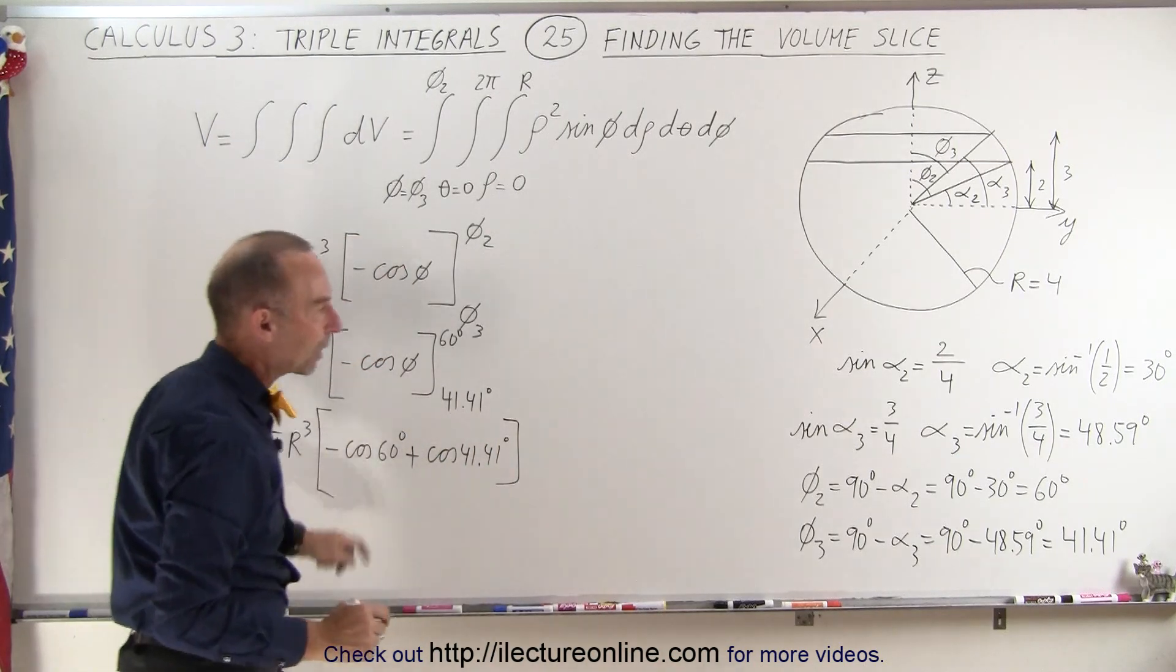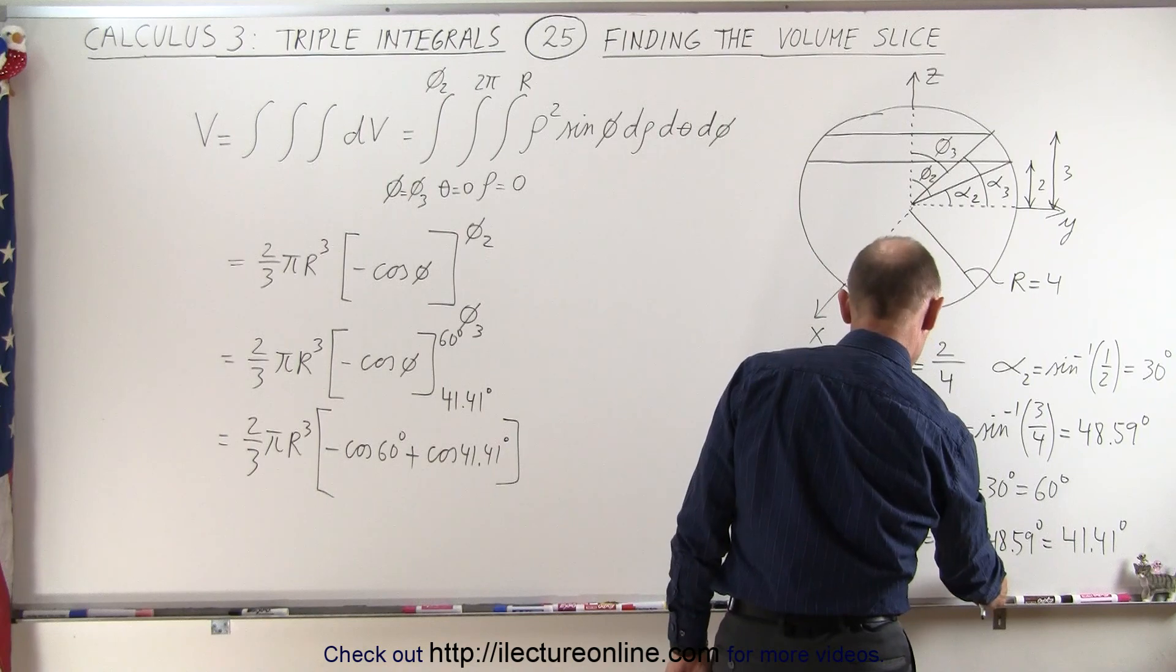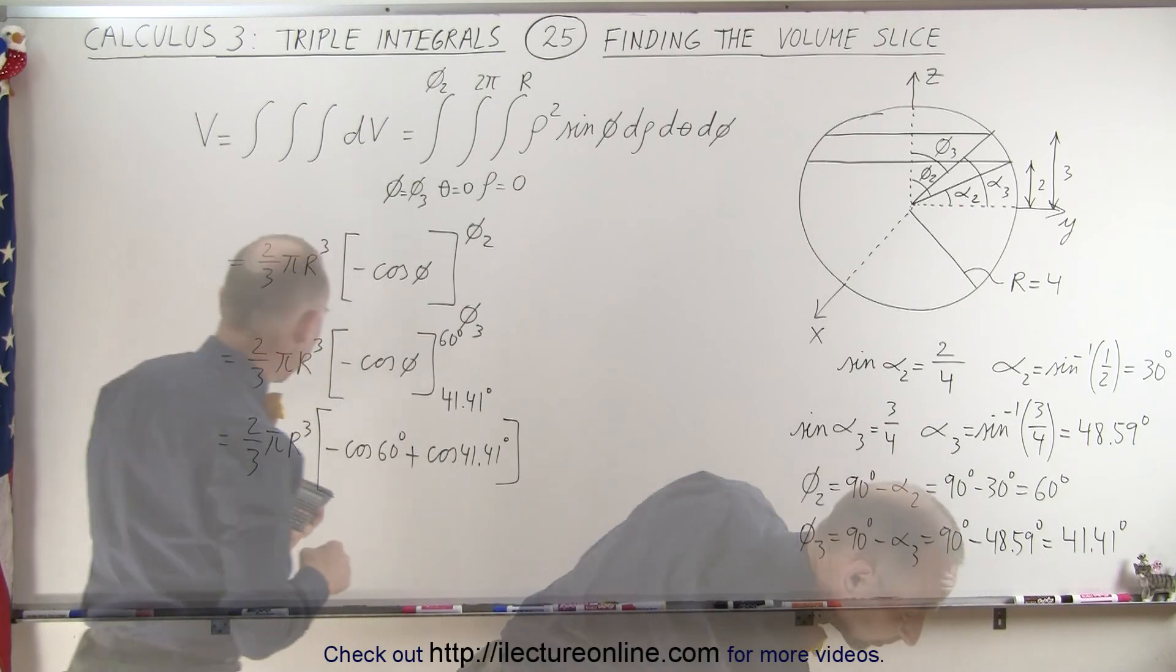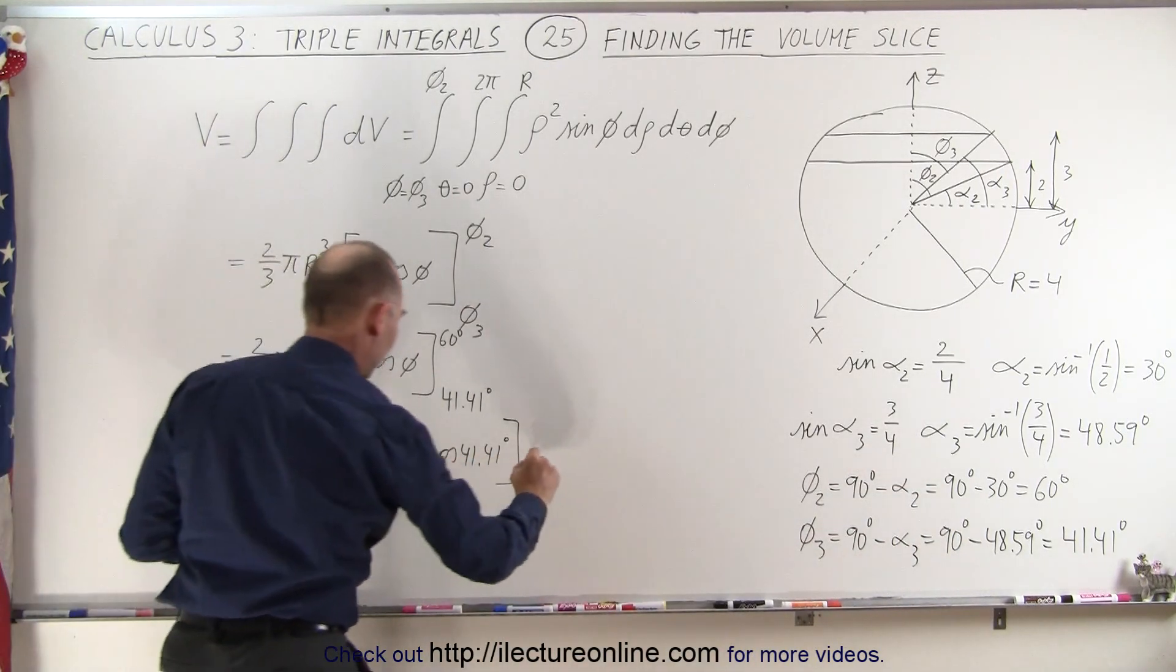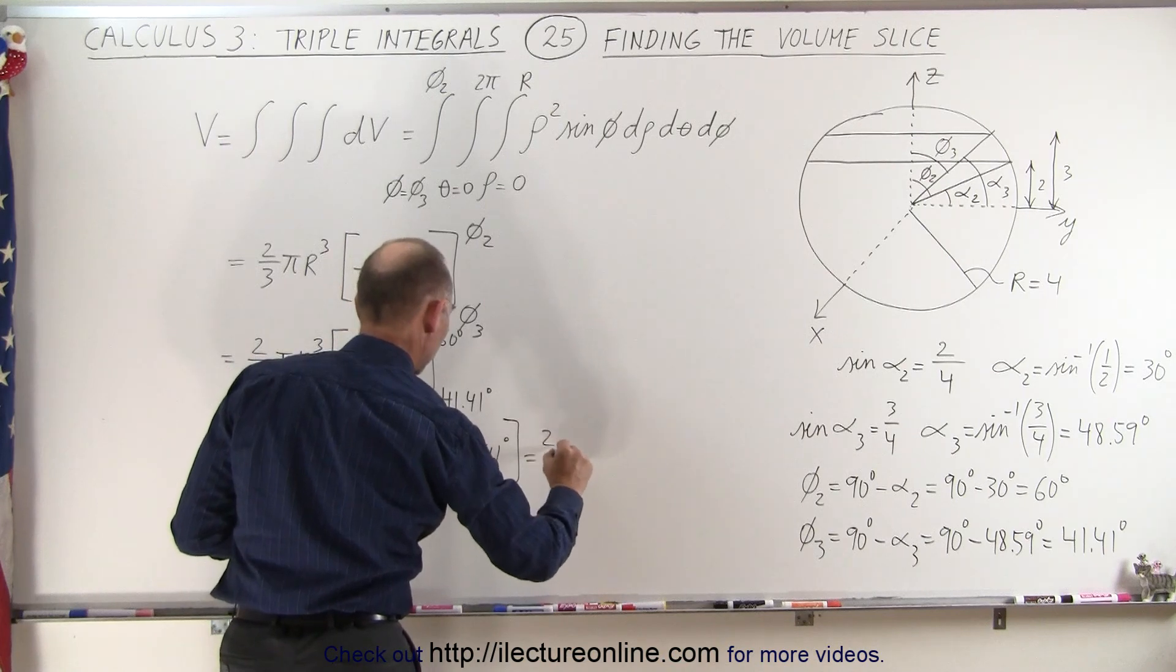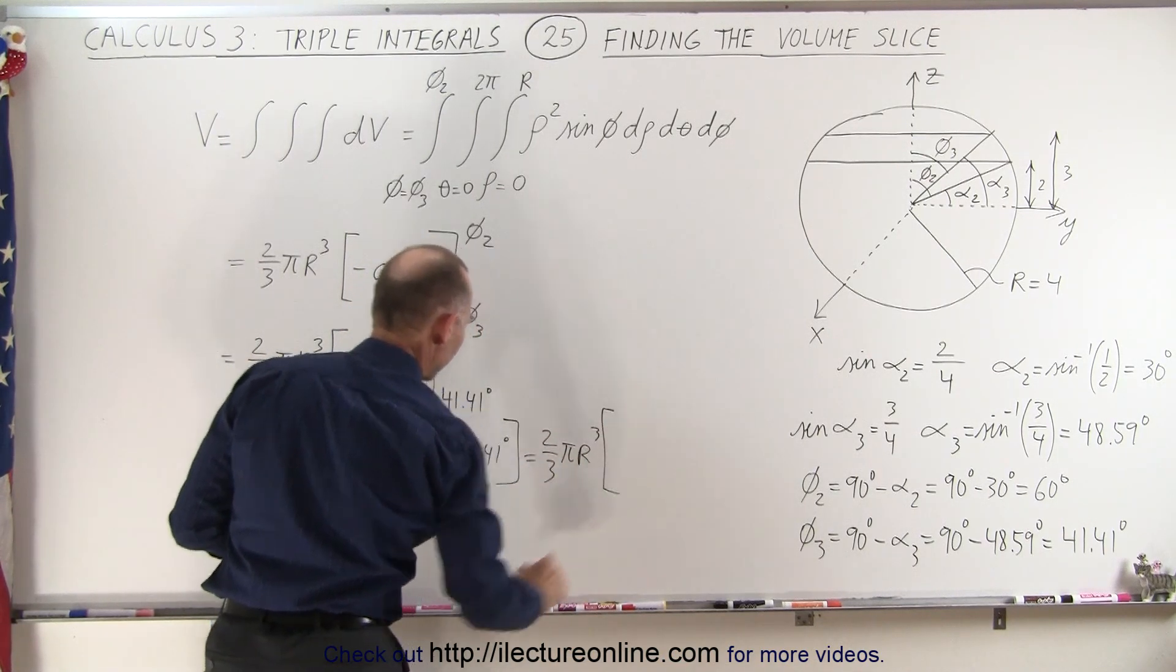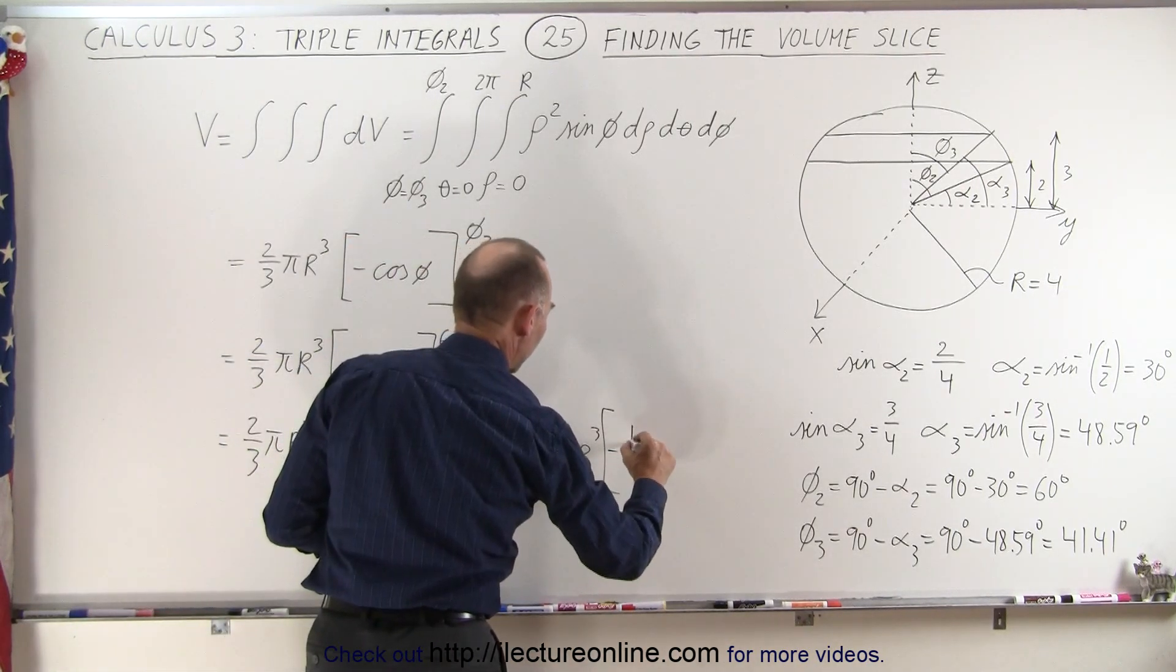The cosine of 60 is one half, that's an easy one, so let's go ahead and plug that one in. So this is equal to 2/3 π r³ times, and the cosine of 60 is one half so that would be minus one half.